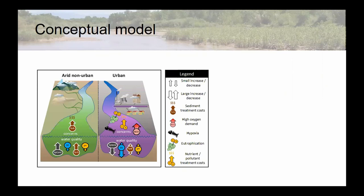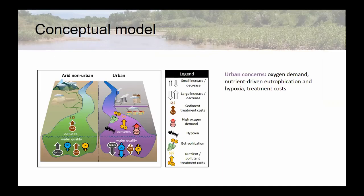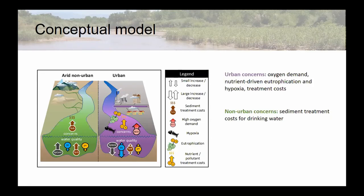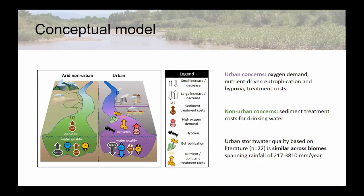To summarize, we developed a conceptual model. We have our water quality parameters, with general parameters summarized, and a couple of concerns based on what our data is saying. It seems like we've got increased oxygen demand with some of these urban plumes, as well as potential for nitrogen- and carbon-driven eutrophication, hypoxia, and potentially the treatment costs associated with that. For non-urban, the super turbid water is a problem — people working in water management here are well aware that it costs a lot of money to remove those sediments. We did a quick literature review — over 22 studies across a really wide range of biomes — and found the water quality responses in the MRG are pretty similar to what other people are seeing across the country.